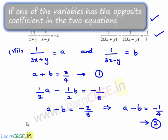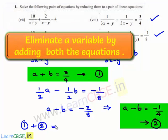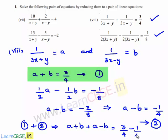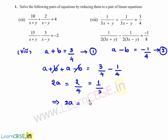Now adding equations 1 and 2: (a + b) + (a - b) = 3/4 + (-1/4). The b terms cancel, giving 2a = 2/4 = 1/2, which implies a = 1/4.